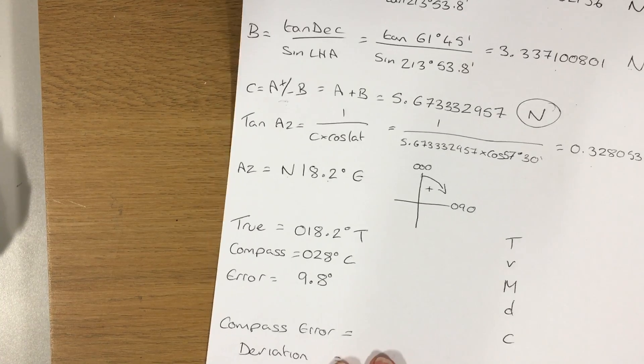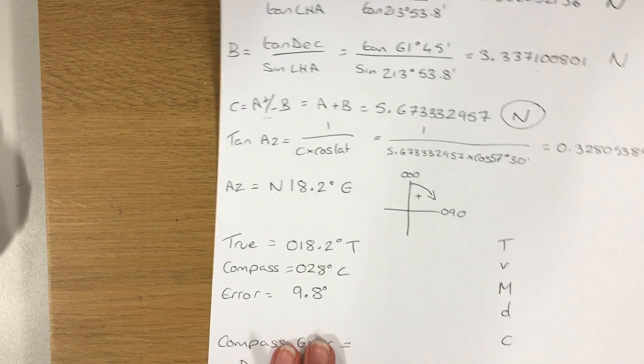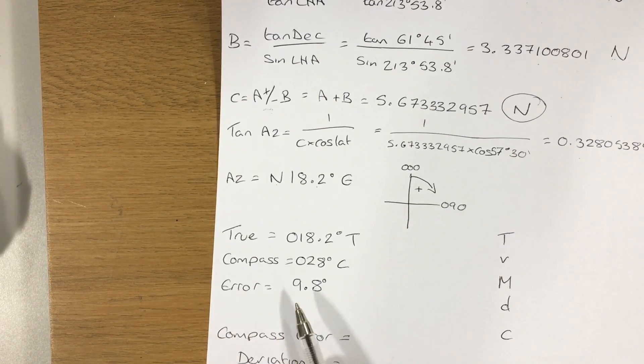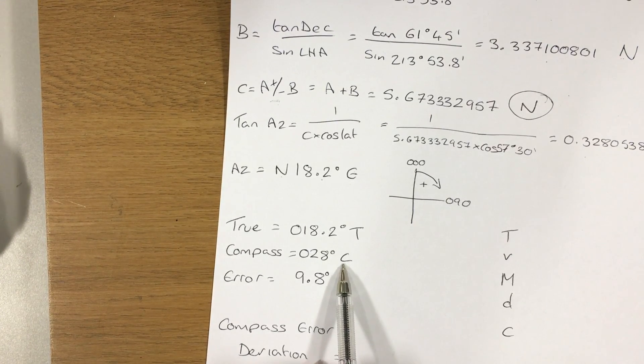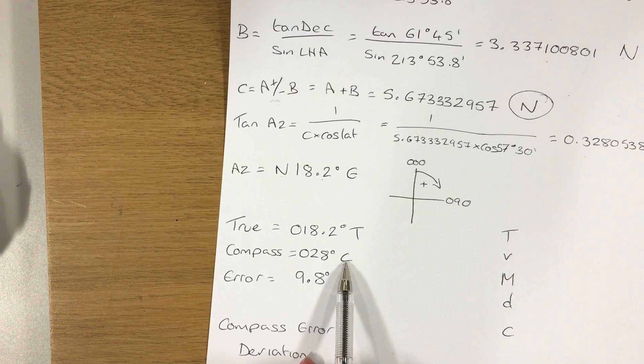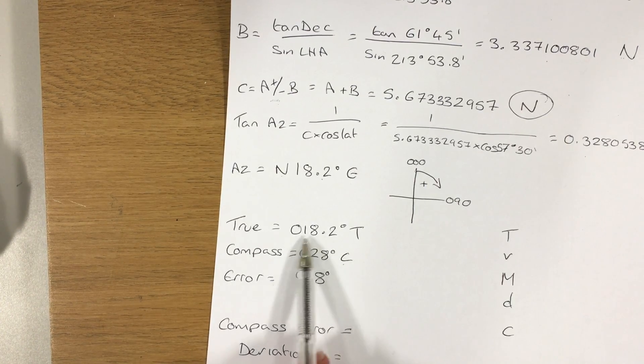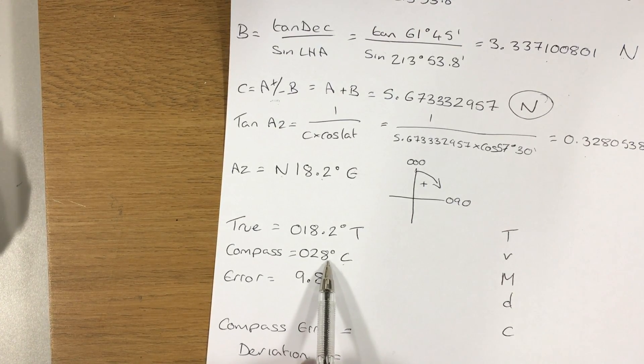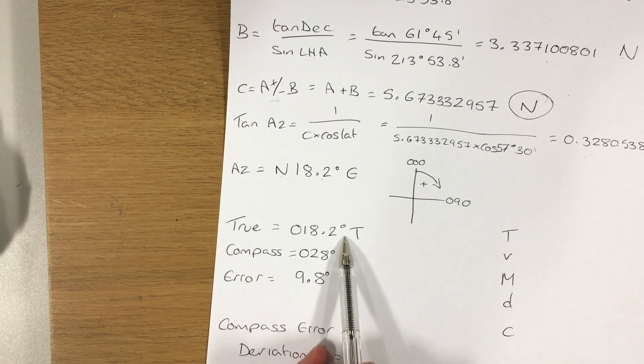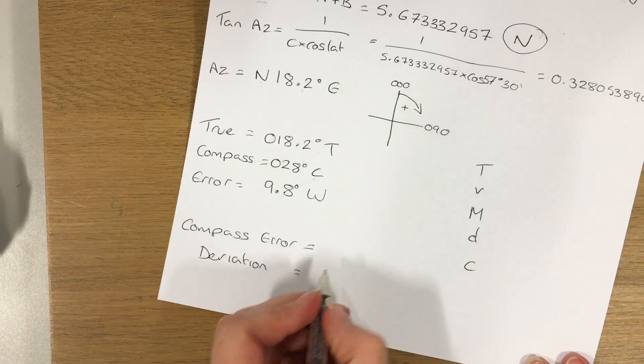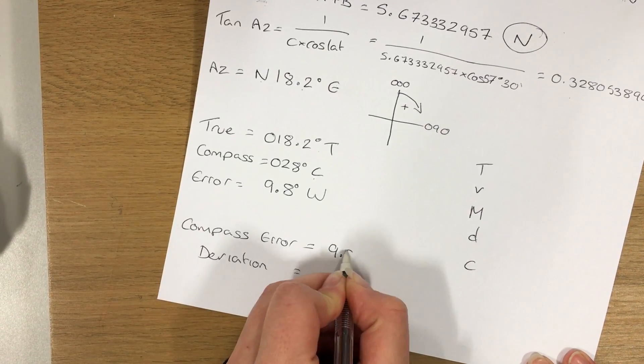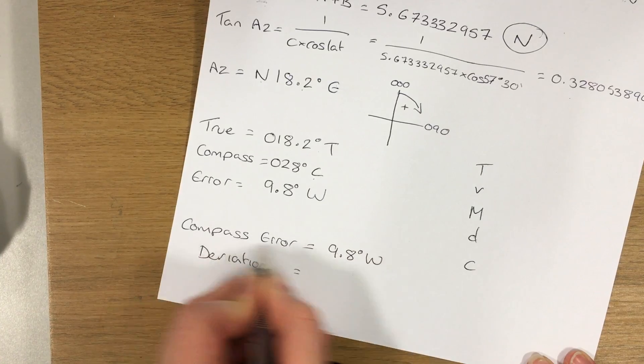28 minus 18.2, so my compass error is 9.8 degrees. Now as with everything else, I need to give this a name as well. And the rule is compass best error west, compass least error east. Now in this instance, my compass is best, meaning it is bigger than my true value. So compass best error west. My compass error is 9.8 degrees west.